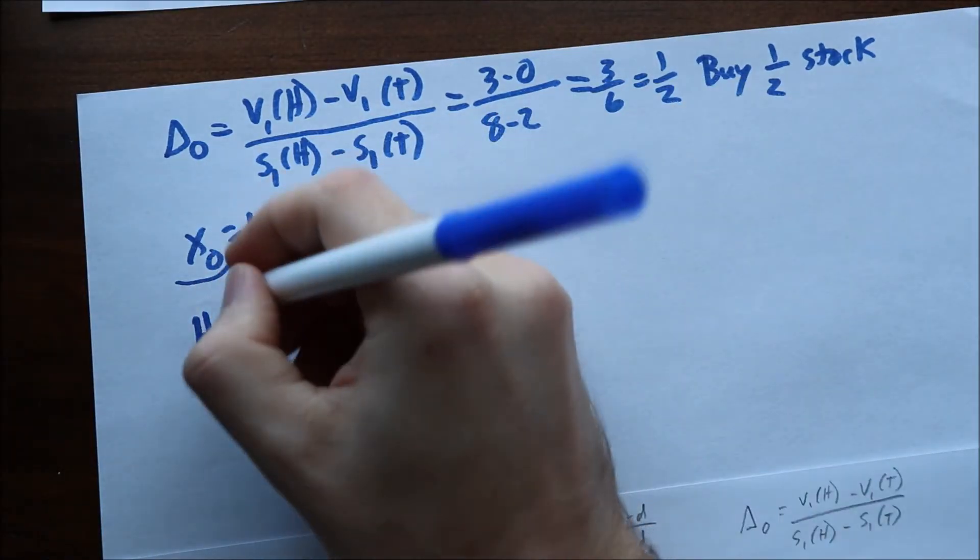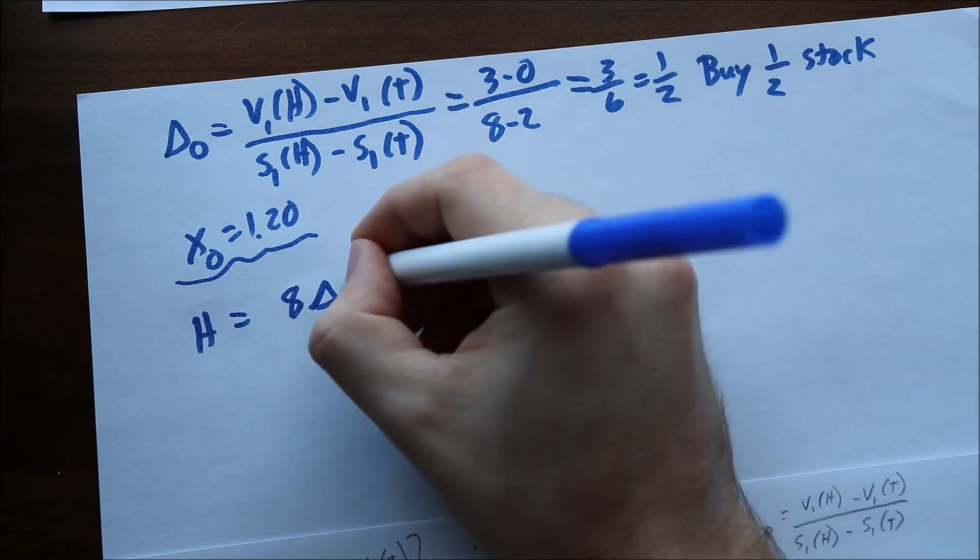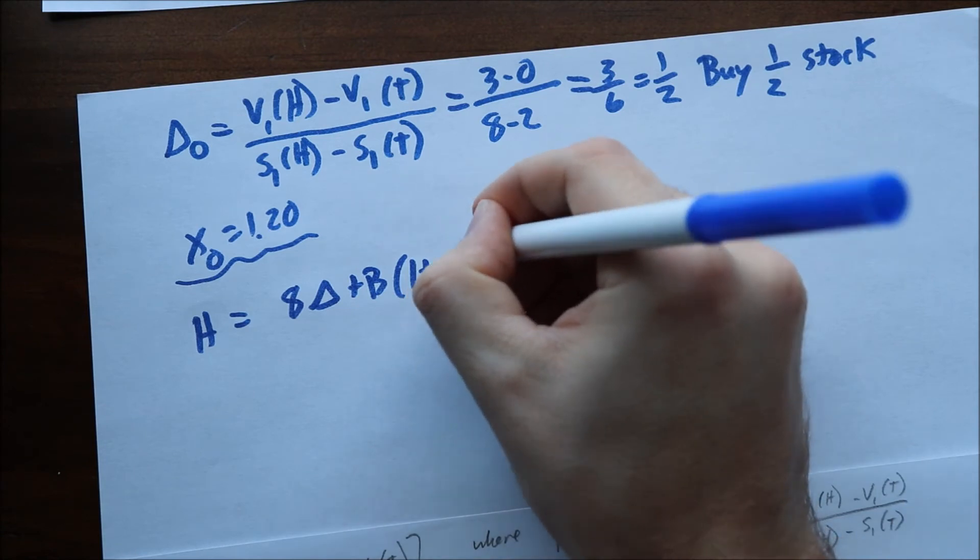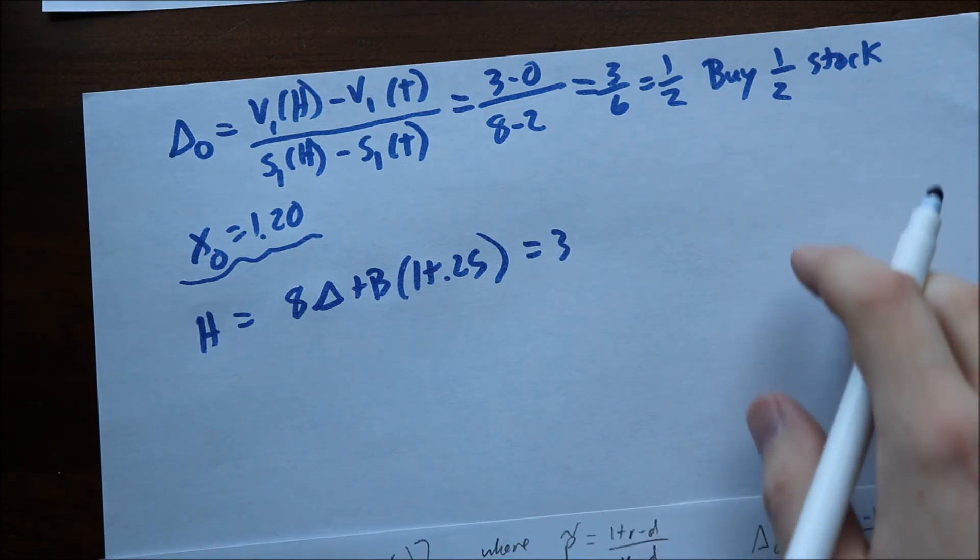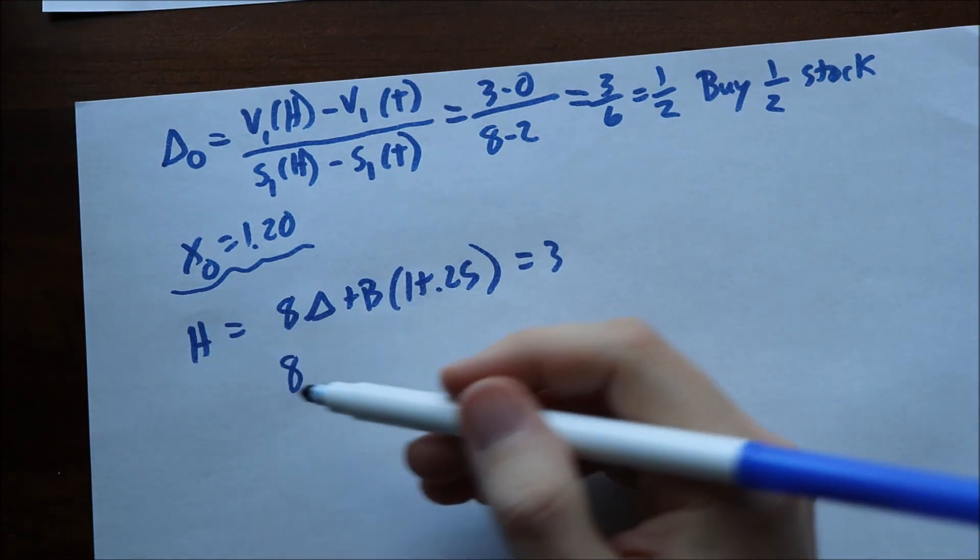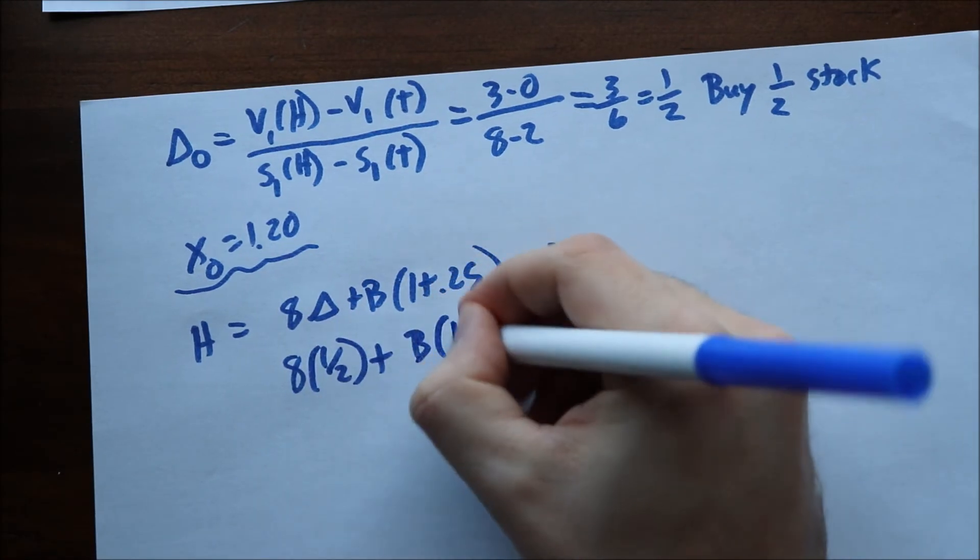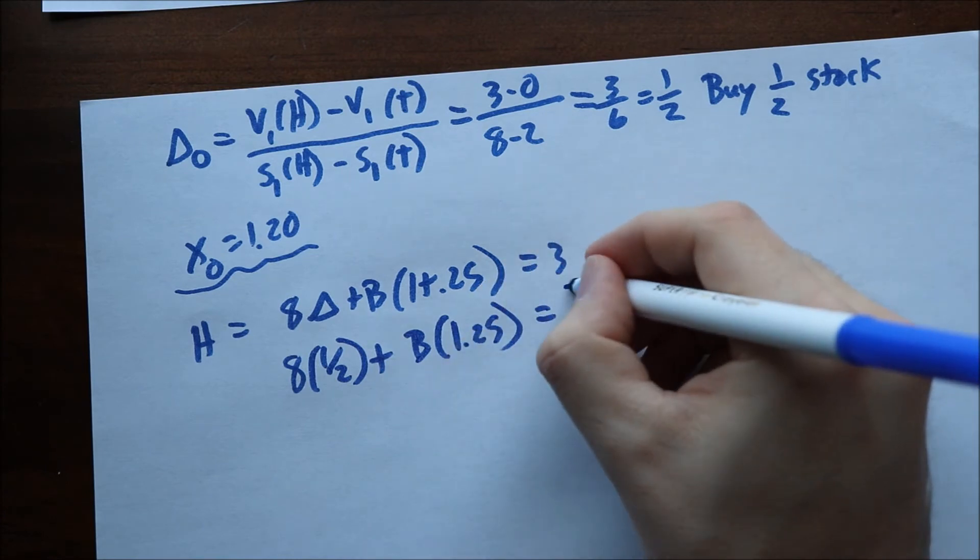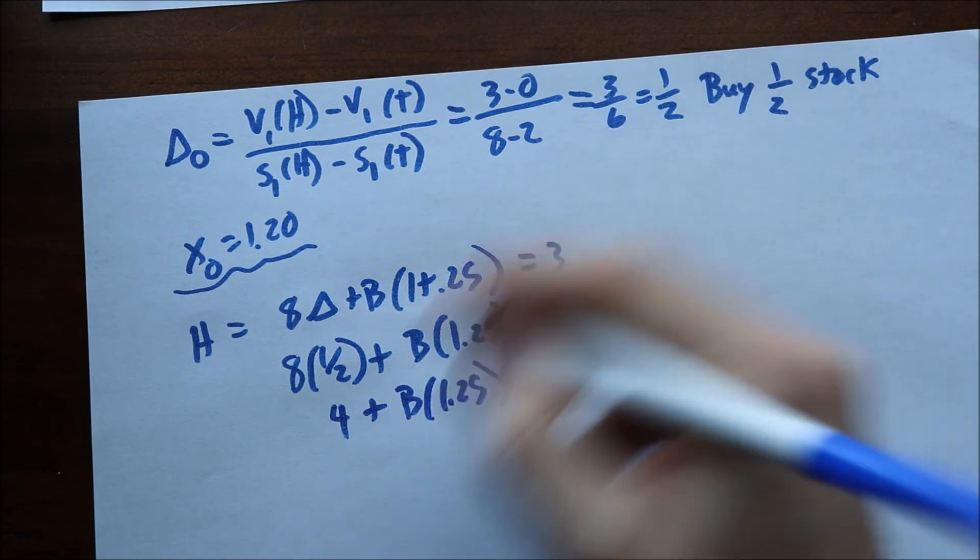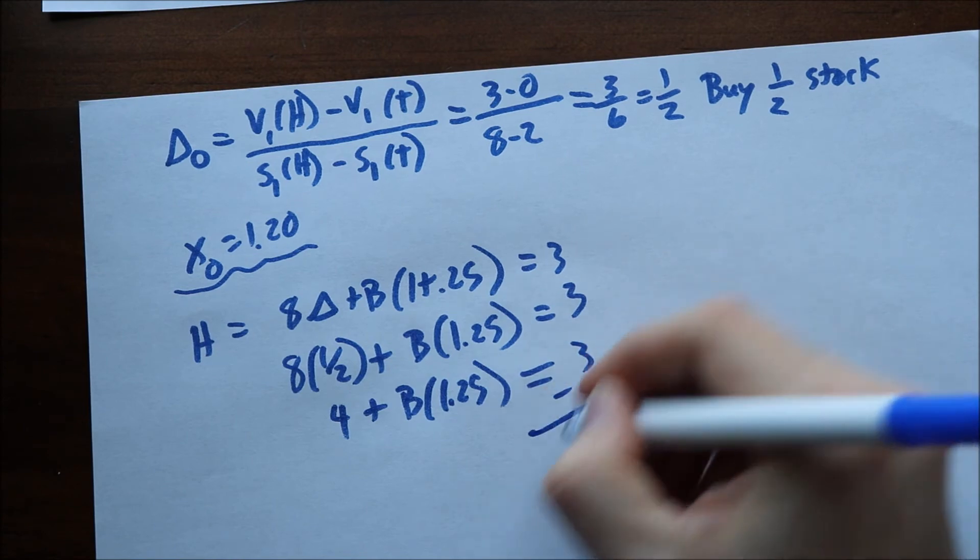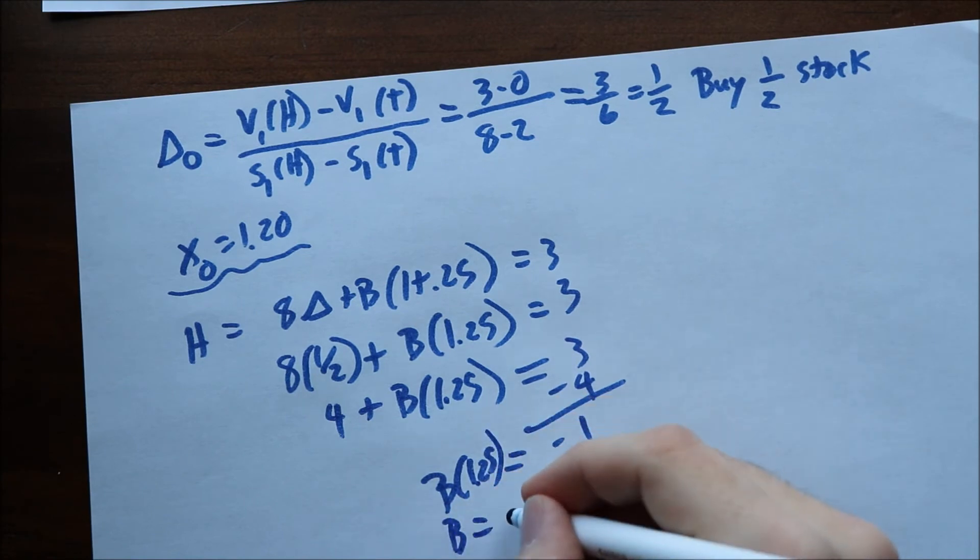So in this scenario, they told us also that the amount of money you had at time 1 is $1.20. The value when you have heads is equal to the heads price, which is 8 times delta, plus how much you borrow, times 1 plus R, which is 0.25. And this should equal the value of 3 of the option. Again, we can test this and use what we got in this example. In this example, we also mentioned that you would purchase half of a stock. So you still have 8 times 1 half plus B times 1.25, and this is equal to 3. This is 4 plus B times 1.25 equals 3. You move the 4 over, so you minus 4, you have negative 1 equals B times 1.25. And you end up with B equals negative 0.8, just like in another example.